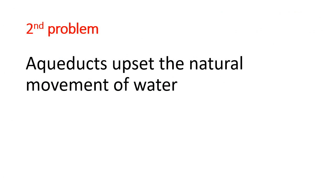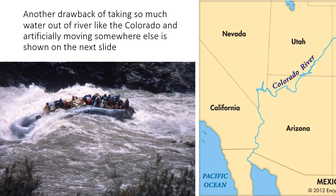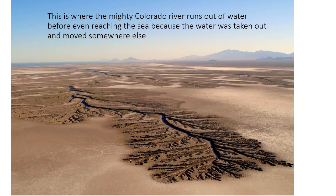The second problem is that aqueducts upset the natural movement of water. Remember, all that water in the Colorado River was going to the ocean through the river, and if we take a bunch of water out, it changes the river, which changes the environment around it. The Colorado River is a big river with lots of fast-moving water from snowmelt over a very large area. But here's what the Colorado River looks like before it even gets to the ocean — it basically runs out of water. So much water is being taken out by Los Angeles and San Diego that sometimes the river doesn't even reach the ocean.